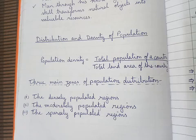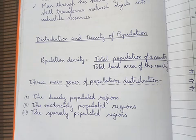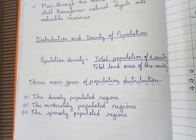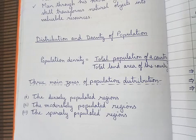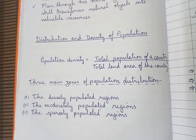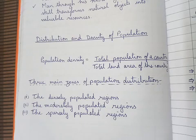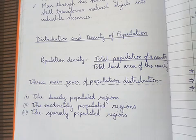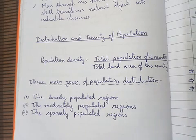Next is Australia. Australia is a big continent and country, and more than 70% of Australia is either desert or plateau. So you will find the population is found in pockets — most of the population is found in coastal areas. Therefore Australia is also a moderately populated region.